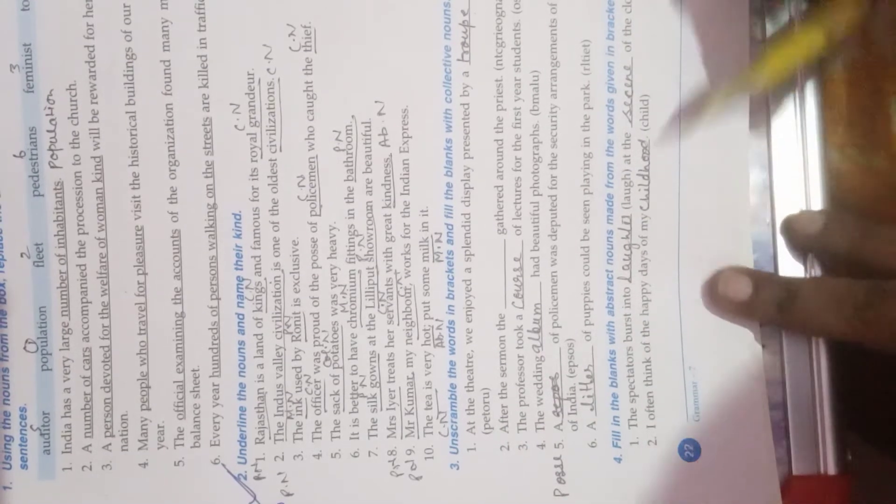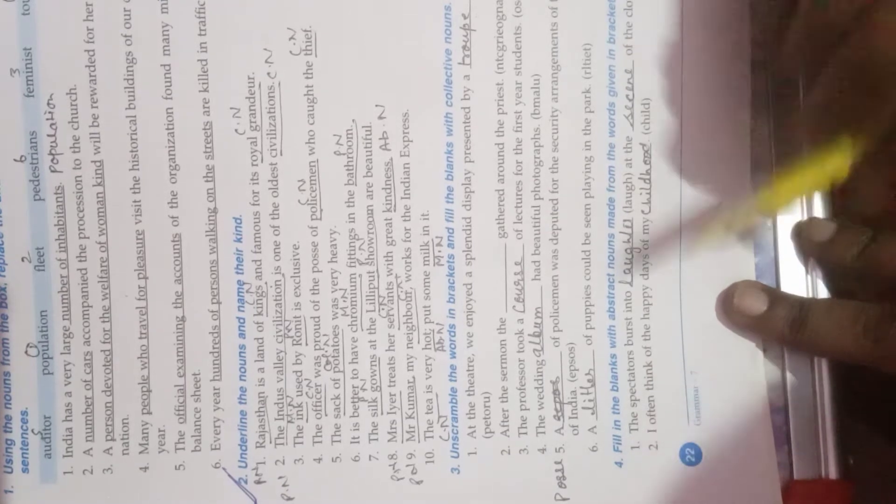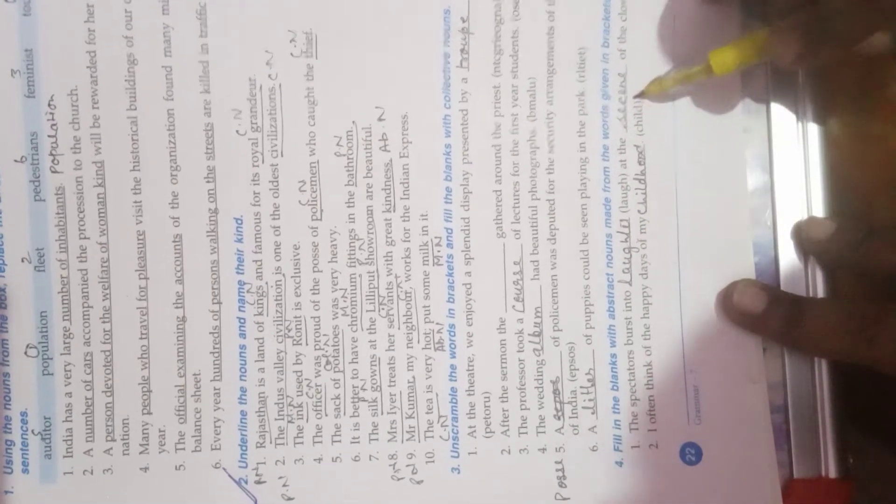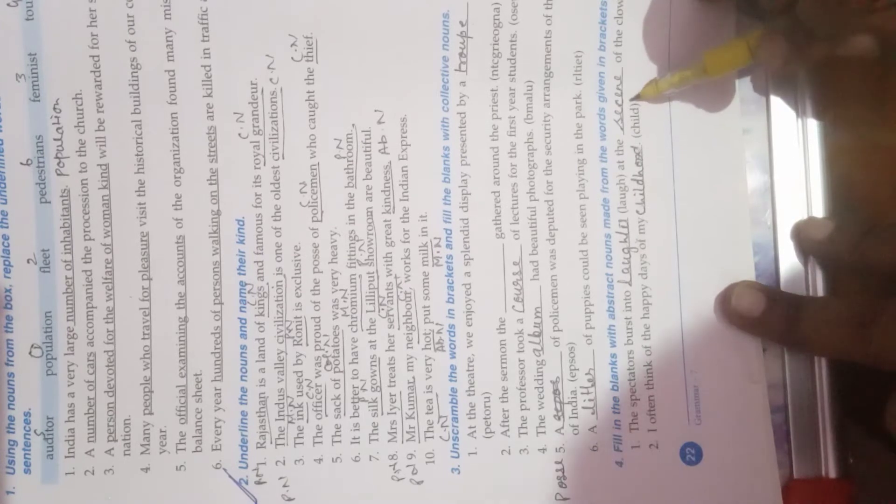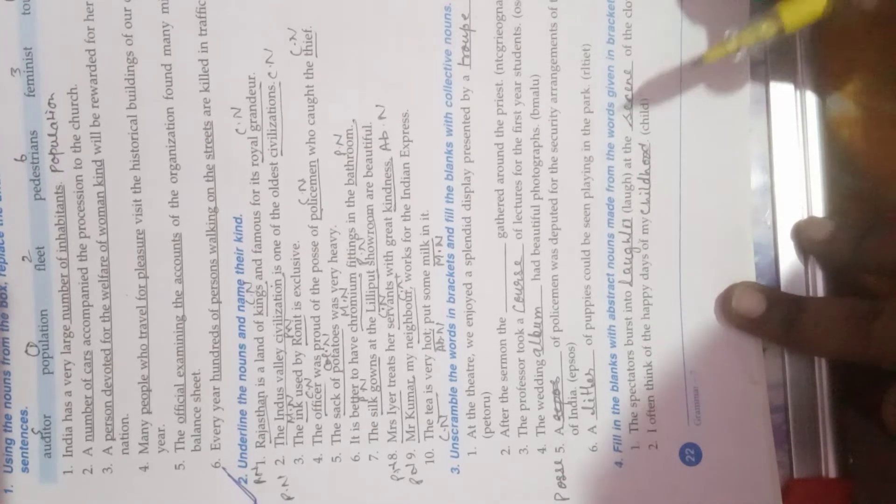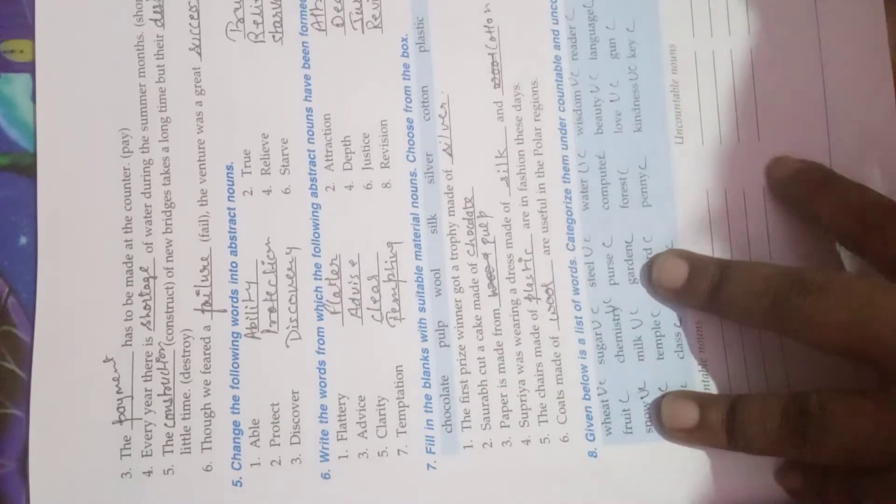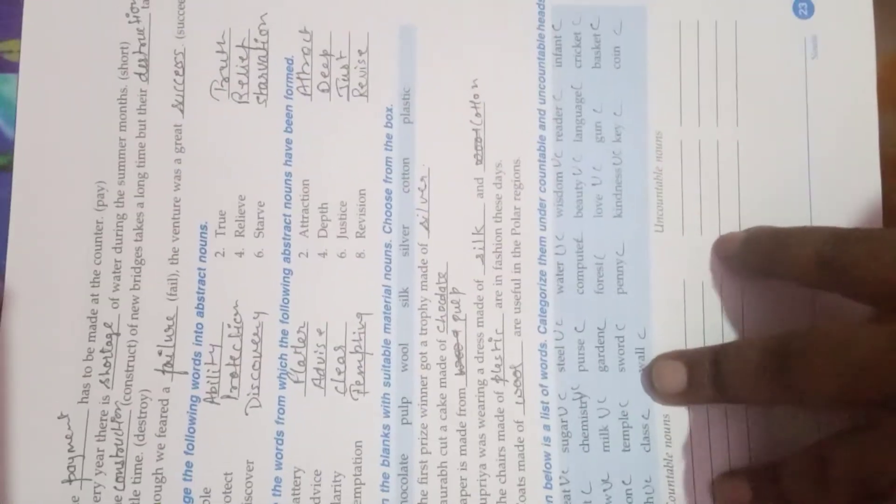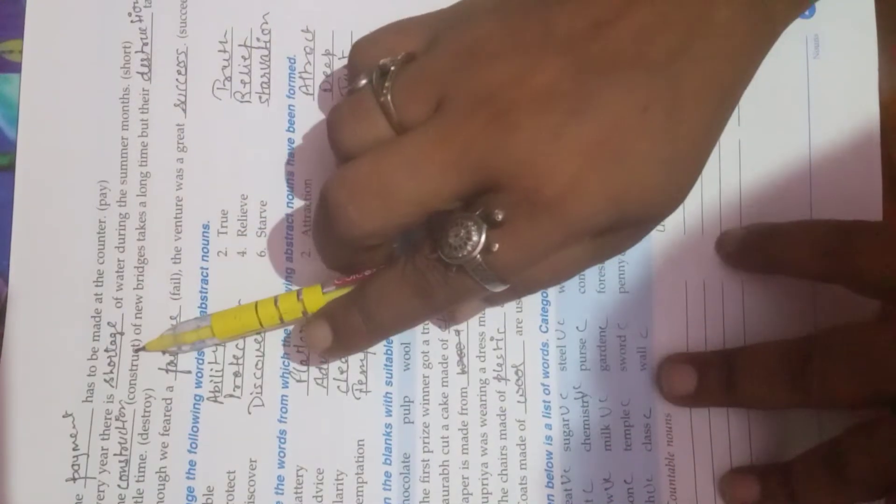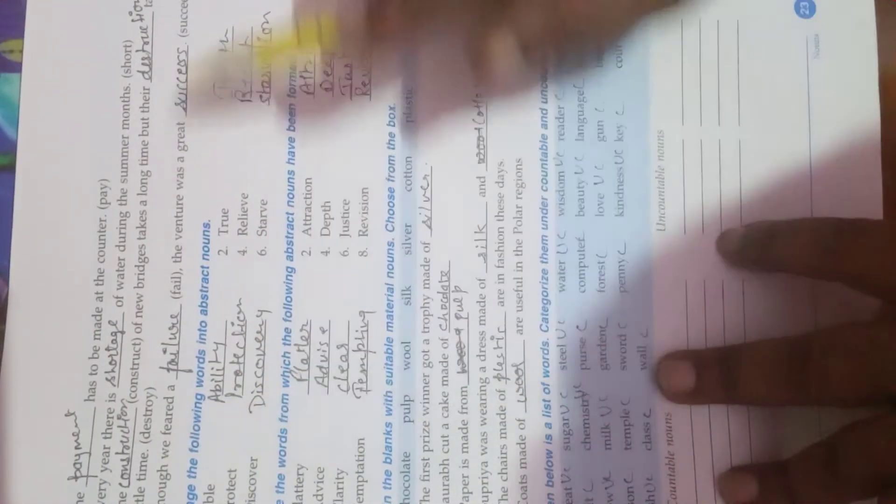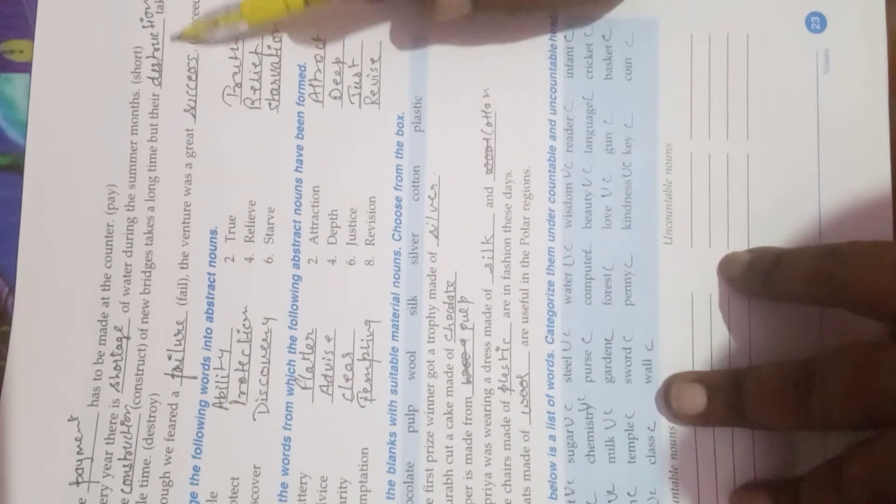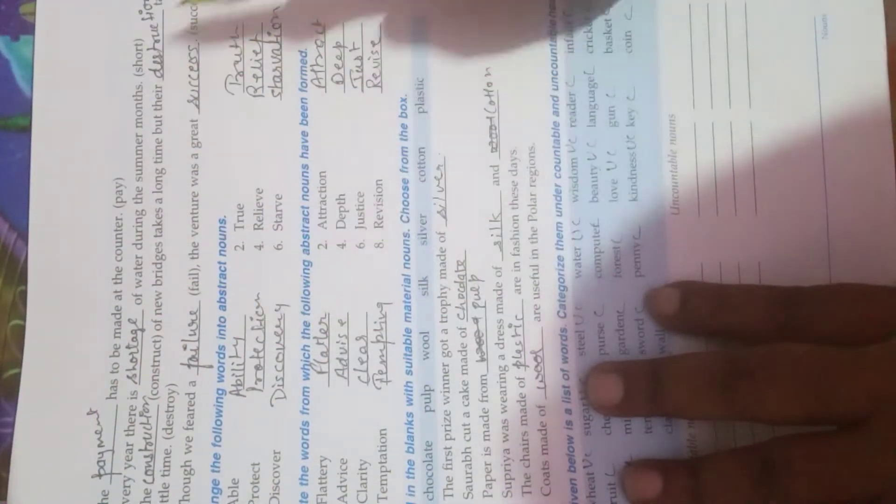Fourth, fill in the blanks with abstract noun. The first answer is laughter. Second part of the first answer is scene, S-E-C-E-N-E. Second is childhood. Third answer is payment. Fourth answer is shortage. Fifth answer is construction, second part is destruction. Sixth is failure and also success.